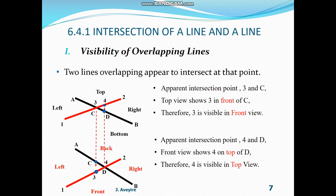Generally, when we look at the projection, the first point you meet along the projection line of the apparent intersection point is not visible. If we take the front view, look at the apparent intersection point 3 and C, and project onto the top view, the first point we meet is C. Therefore, C is not visible. Now, if we go to the top view, look at the apparent intersection points 4 and D, and project back onto the front view, the first point we meet is D. Therefore, D is not visible.